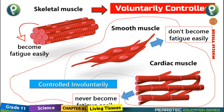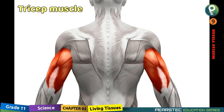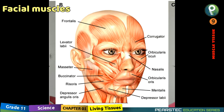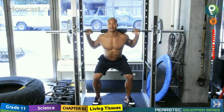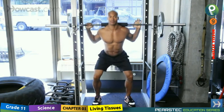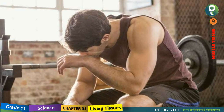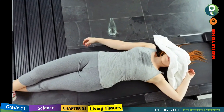Unlike smooth muscle cells, skeletal muscle cells get fatigued easily. For example, bicep muscles, tricep muscles, muscles in the leg, and facial muscles are some examples. When you are doing exercises for your bicep or tricep muscles, after some time you get tired because skeletal muscle fibers get fatigued very easily, unlike smooth muscle cells.